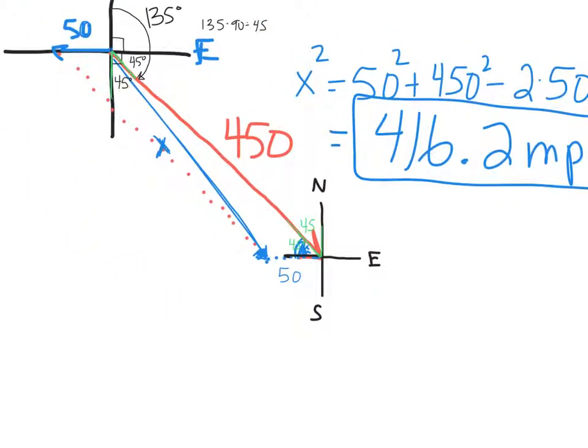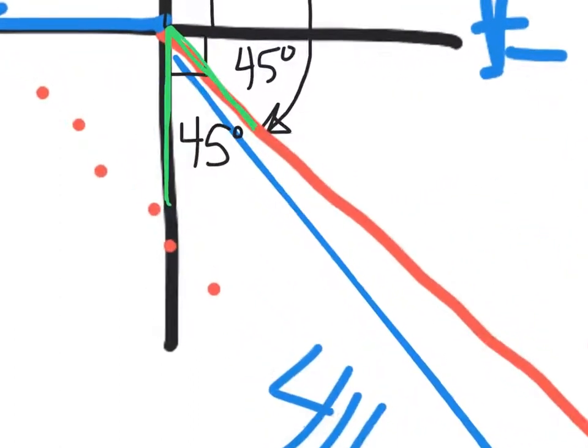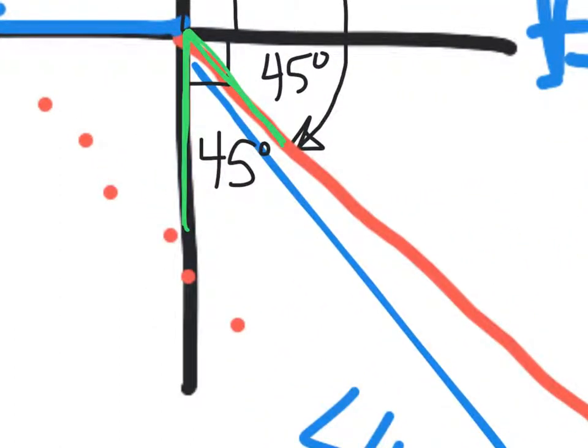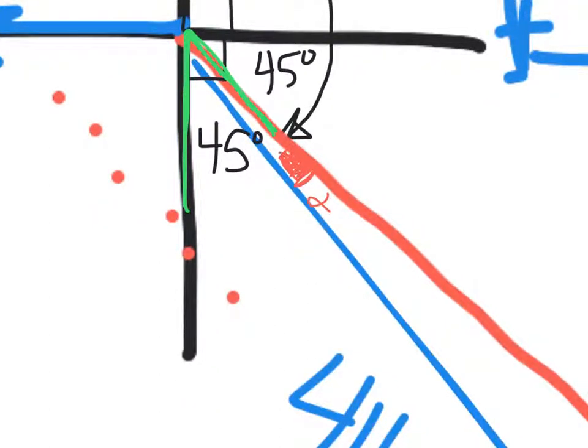Okay so now I can erase this over here. I know that this is 416.2 so let me write that in here because now I'm going to do one other thing and that's figure out the course. So I'm going to use the law of sines and figure out what this angle right here happens to be. I want to know that angle and I can use the law of sines to do it.